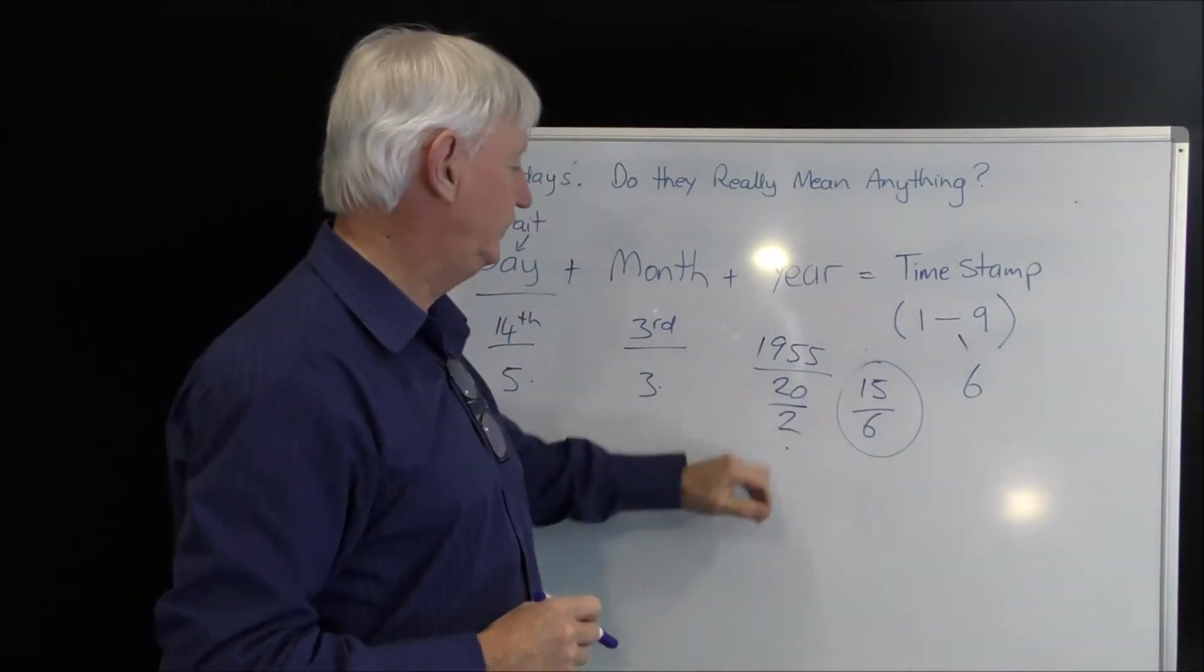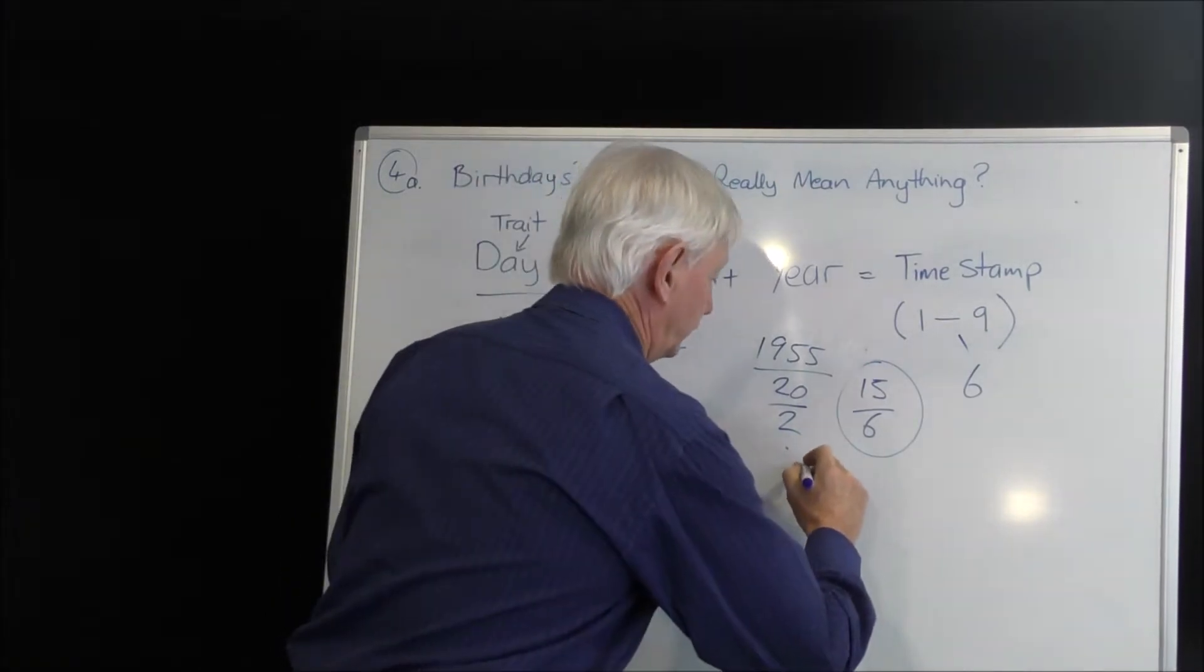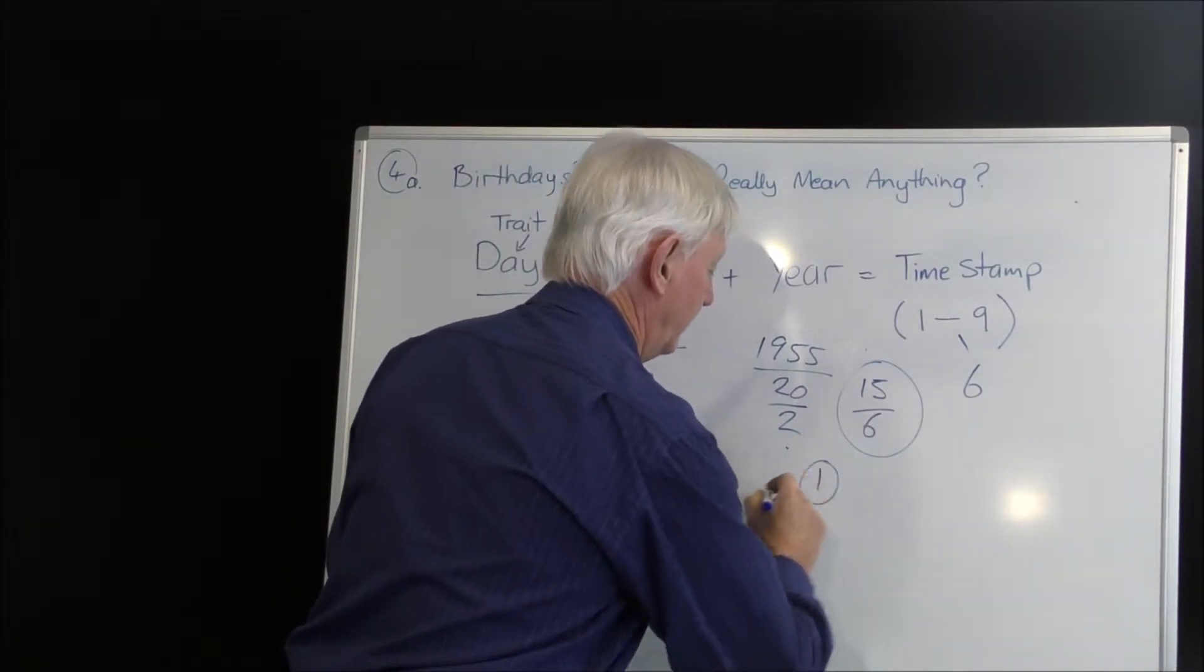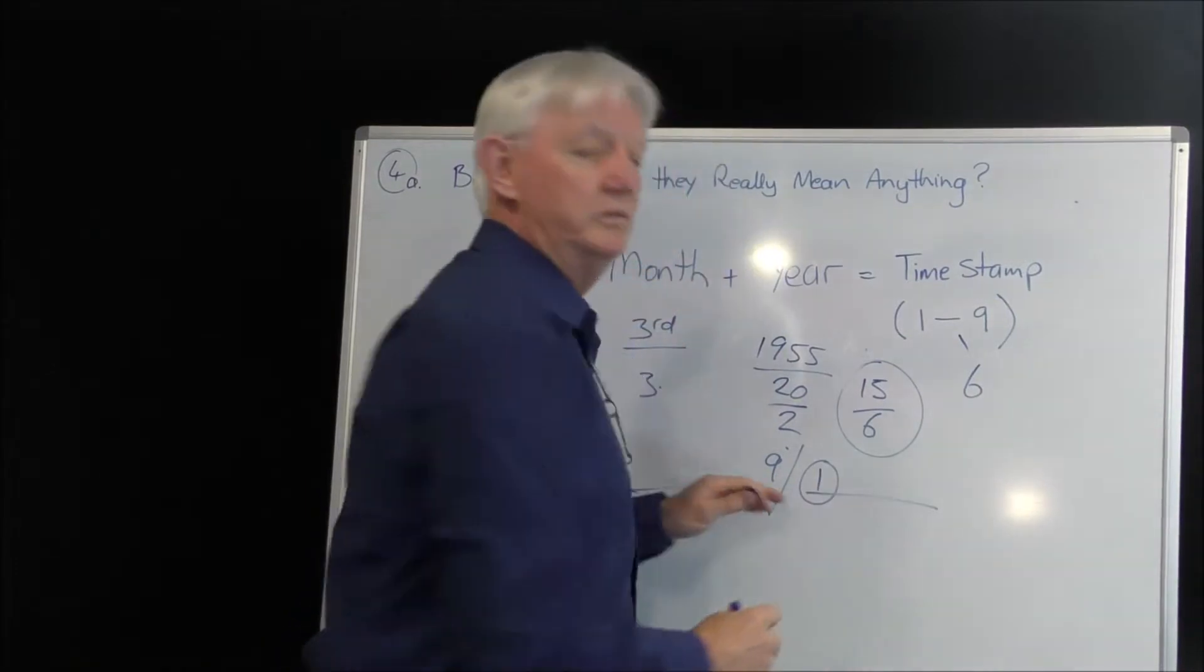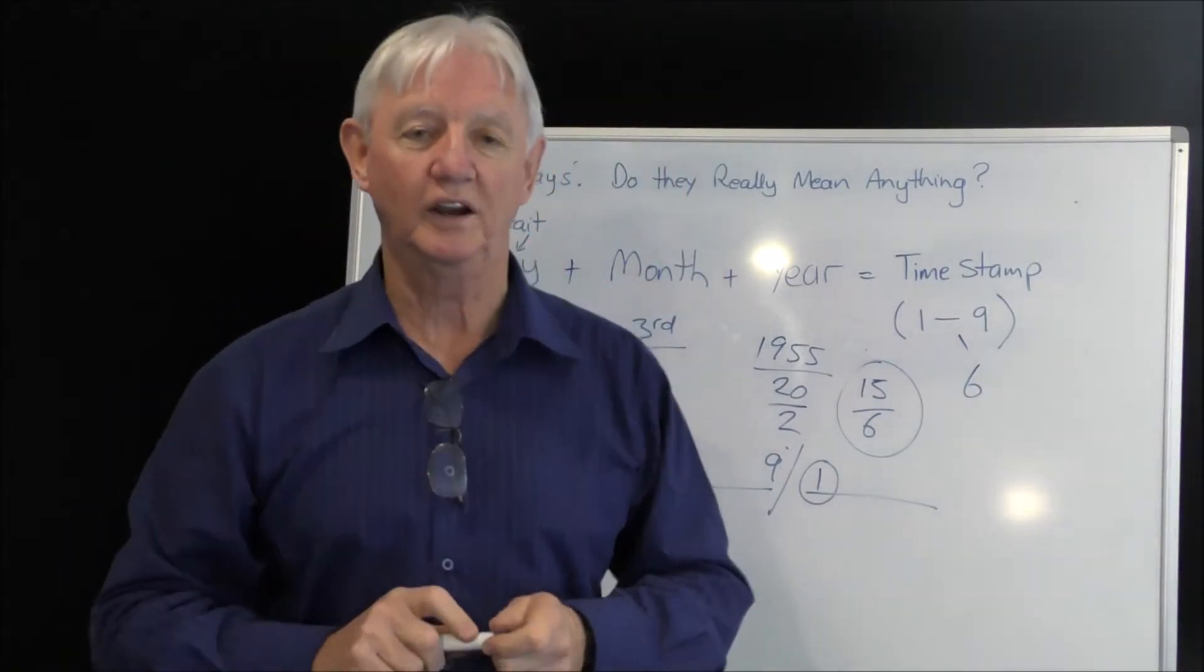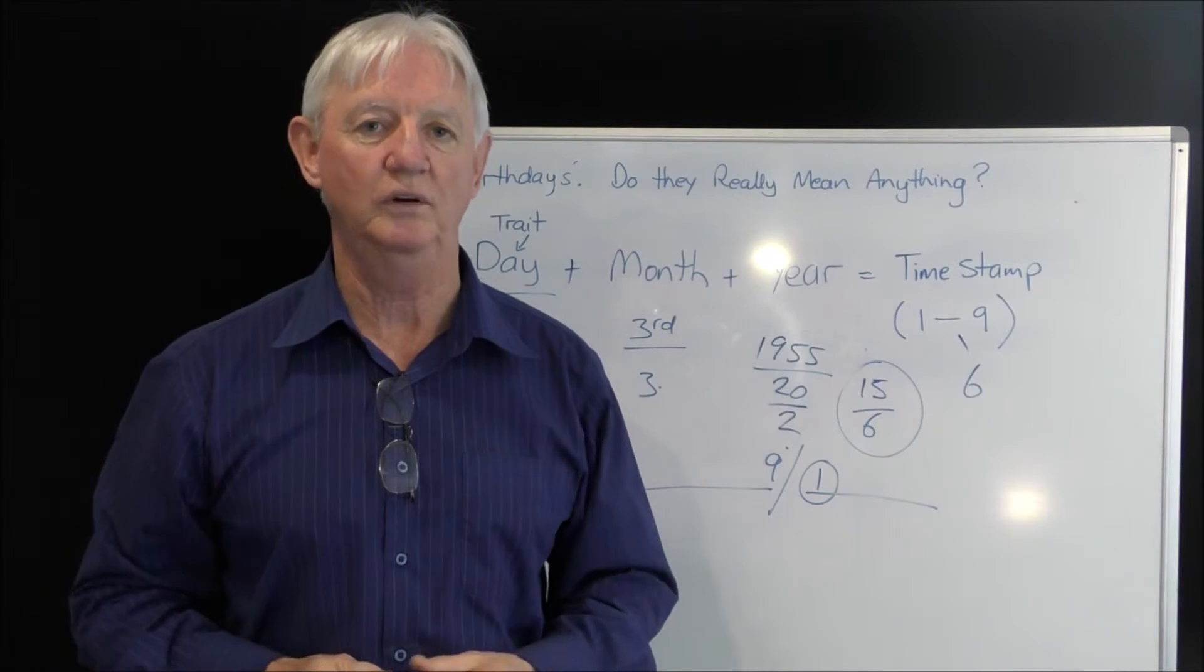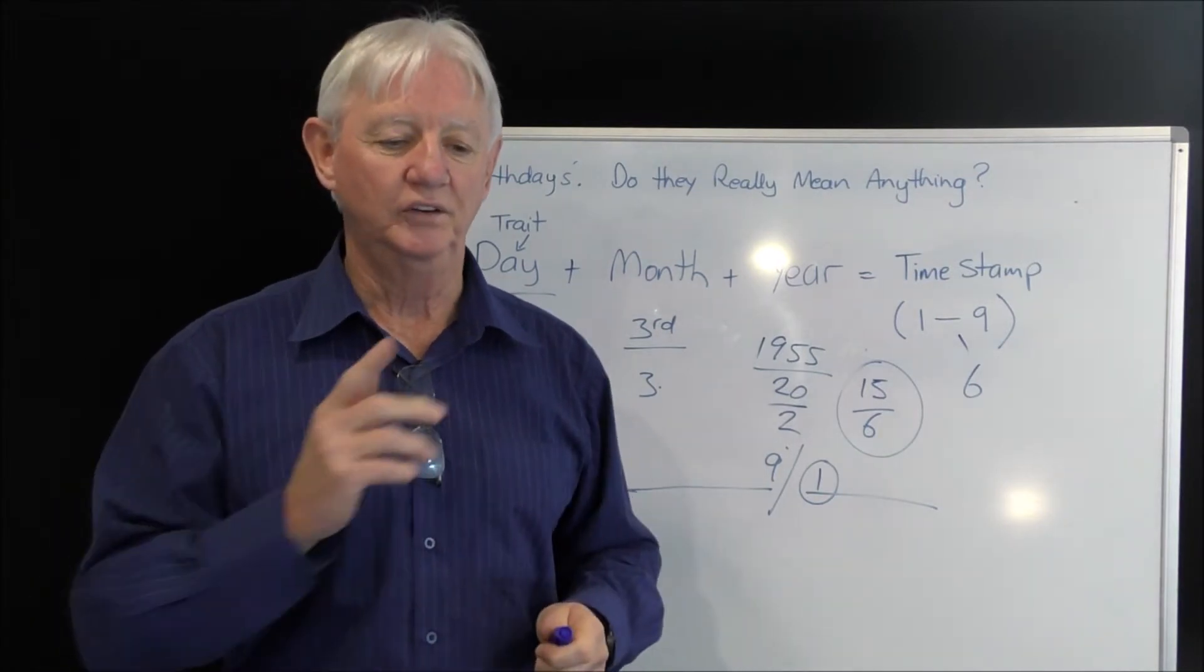So the day that he died was a brand new year for him, which means he finished an old cycle of nine years and was starting a new cycle. This is something that I monitor and watch when I'm looking at doing people's birthdays.